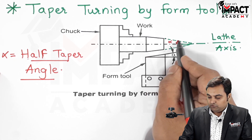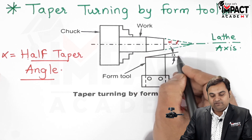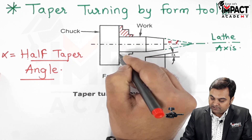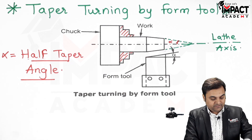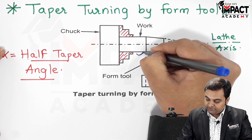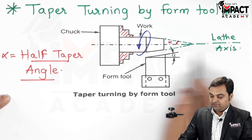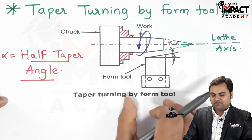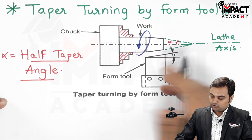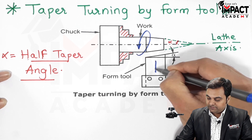That is, if we want a taper of an angle of alpha, the tool also needs to be ground at an angle of alpha. Now the workpiece is held in the chuck, or we can say the headstock of the lathe machine, and then it has to be rotated. The workpiece is rotated in an anti-clockwise direction along the lathe axis, and then this form tool which is clamped in the tool post is fed towards the workpiece in a direction which is perpendicular to the lathe axis.